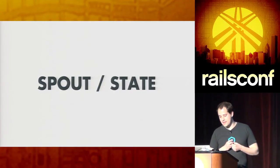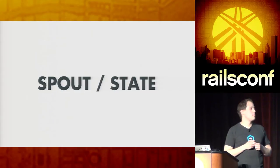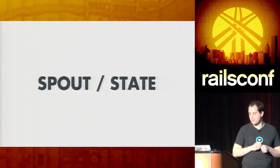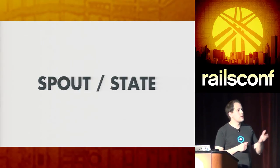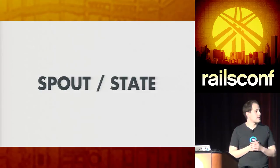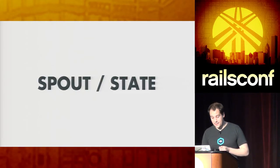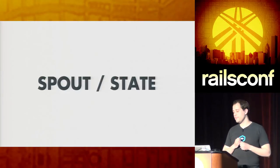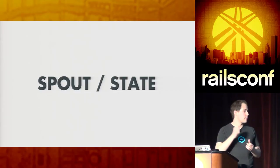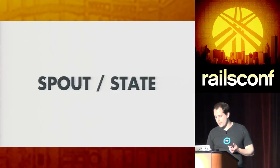Next, spouts and states. Spouts are the source of the streams — this is how you get data into Storm, the starting point. Anything you want to read from the outside world is going to end up being represented as a spout. This can be reading from Redis, from SQS, reading from anything. You could implement a spout that reads directly from the Twitter API, from a database, that makes HTTP requests, or that gets the time of day even. States are the opposite — this is how you get the result of transformations outside of Storm.